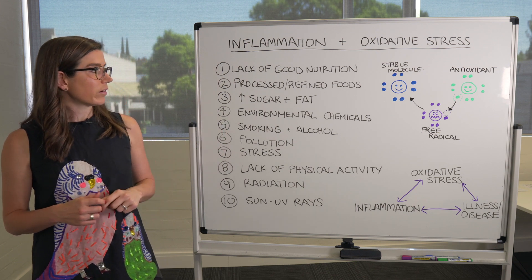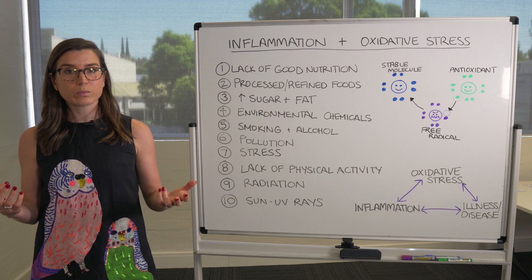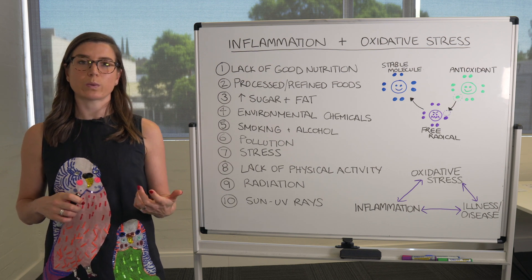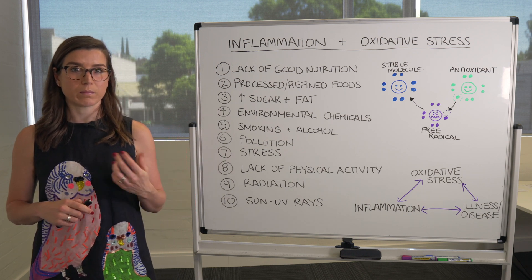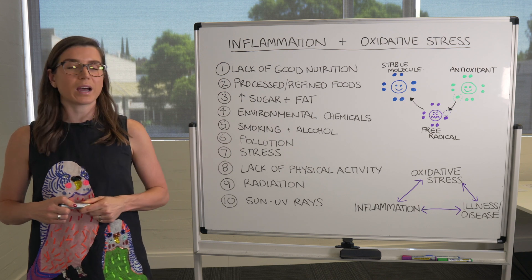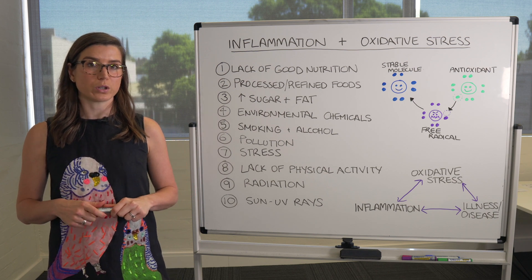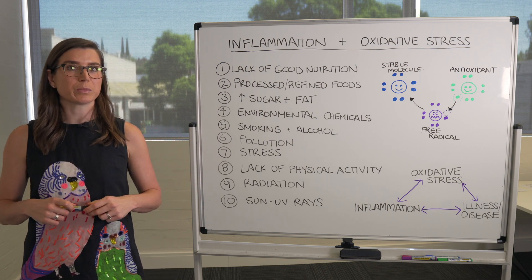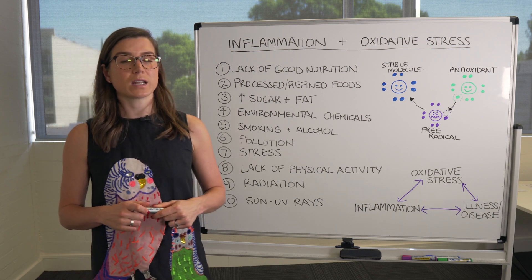Number four: environmental chemicals. These are chemicals found in our homes and in our food — things like pesticides, and a lot of chemicals that leach into our food from packaging. Particularly if it's plastic packaging and you're putting it in the microwave, there's a much greater likelihood of these chemicals getting into your food. There are lots of things you can do to minimize your exposure. Eating organic can help — it doesn't eliminate environmental chemicals completely, but it definitely minimizes it. I know organic food can sometimes be a little bit more expensive.